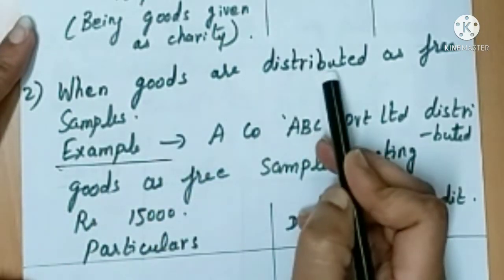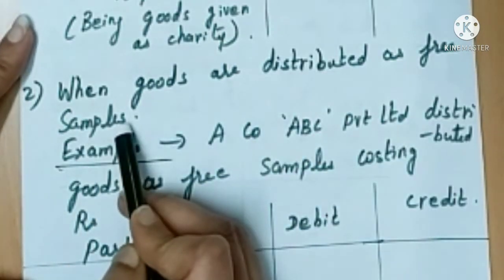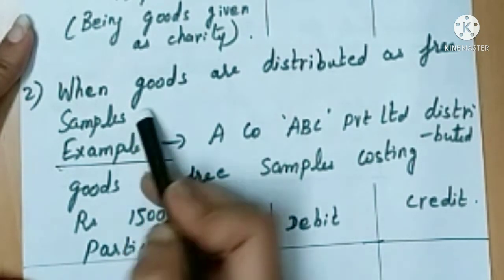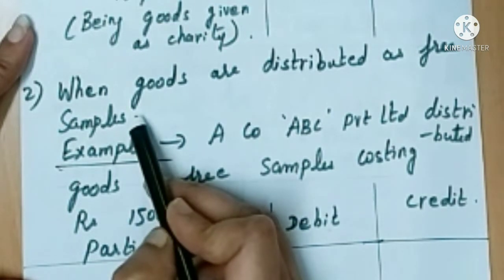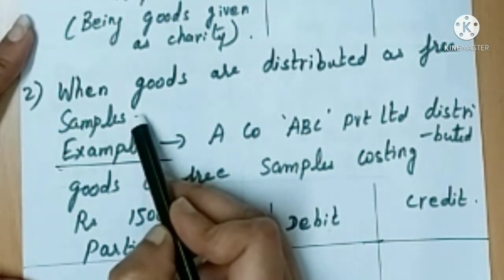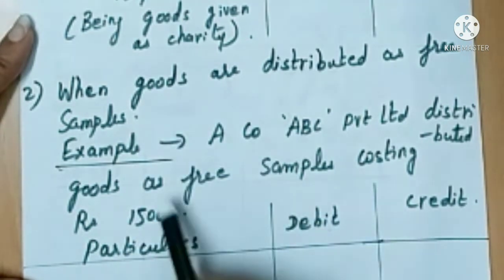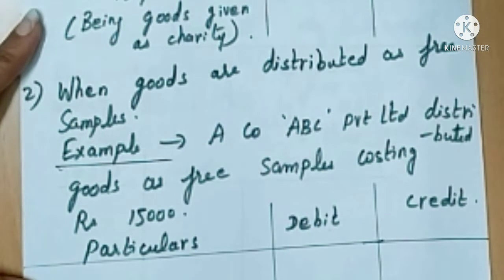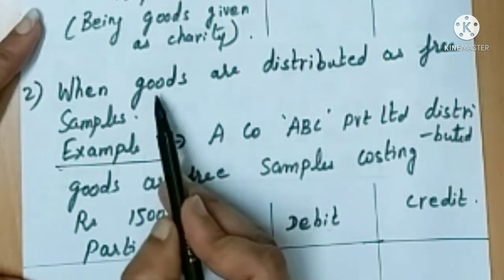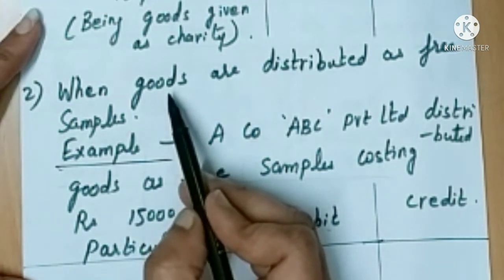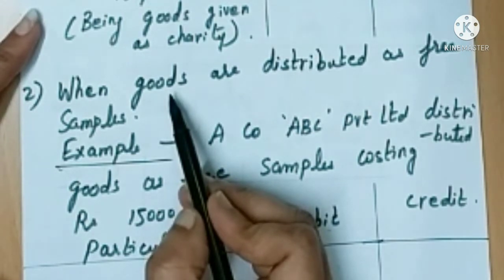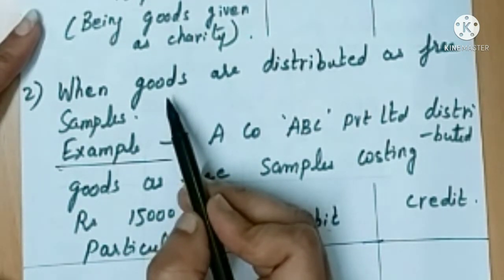When goods are distributed as free samples, it is like an advertisement. So whenever free samples are given, it is like an advertisement. We already know that advertisement is an expense, so we have to debit advertisement account and credit purchases, because goods are given as free samples, so there is a decrease in goods — that is, a decrease in purchases. The entry is: advertisement account debited to purchases account.